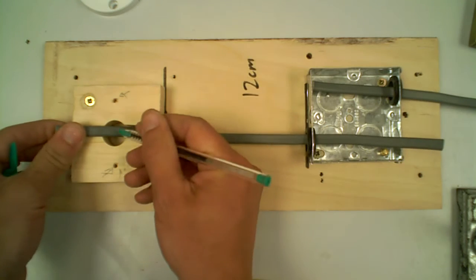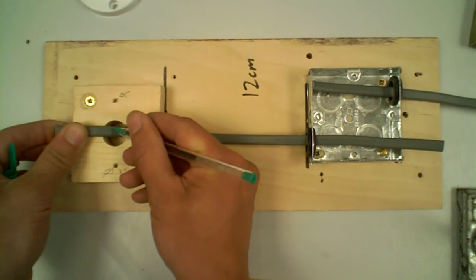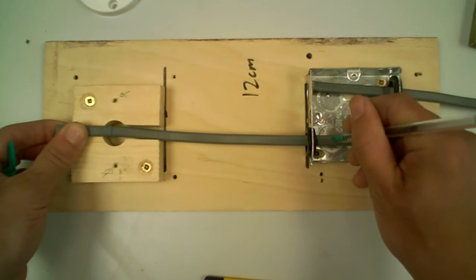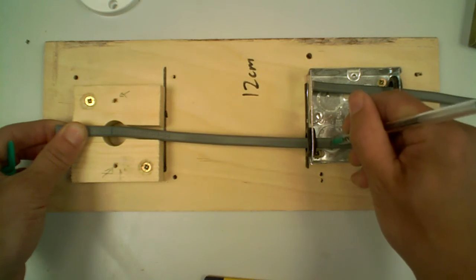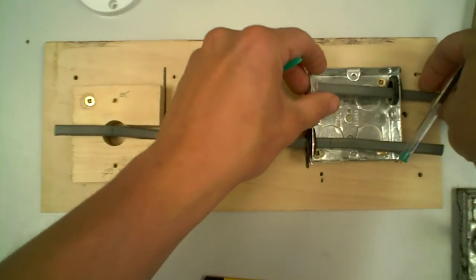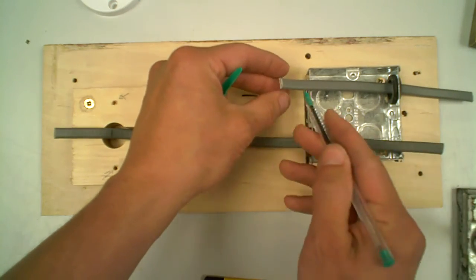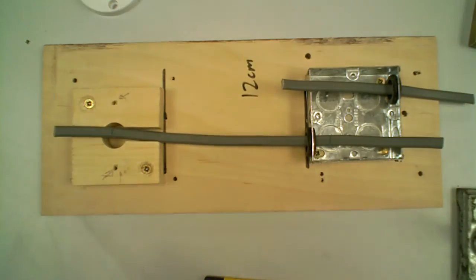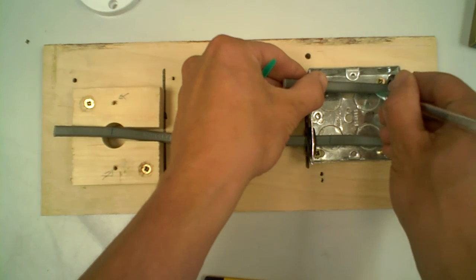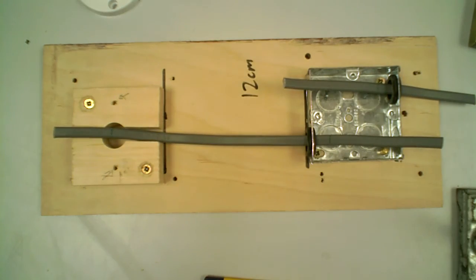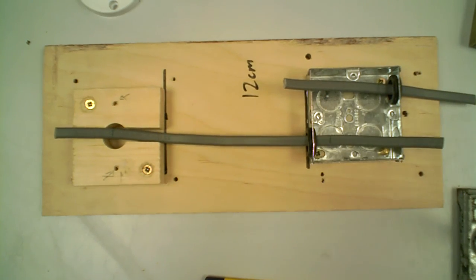Mark it up at the center of the hole there and mark it a centimeter or two inside the back box. With this cable here, I'm just going to again just pull it in a little bit further, give it about two centimeters out overlap, then mark it about a centimeter into the box.